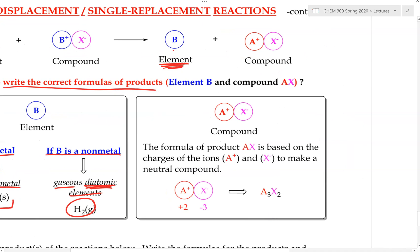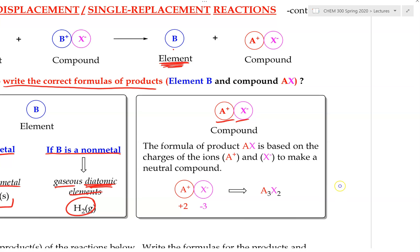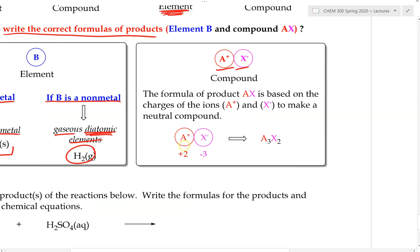Now let's go over writing the formula of the compound product AX. AX is a compound and its formula is based on the charges of A and X to make a neutral ionic compound — the same process as writing ionic compound formulas. For example, if A has a charge of +2 and X has a charge of −2, the formula would be AX. If the charges differ, use the cross-multiply method to produce a neutral ionic compound.